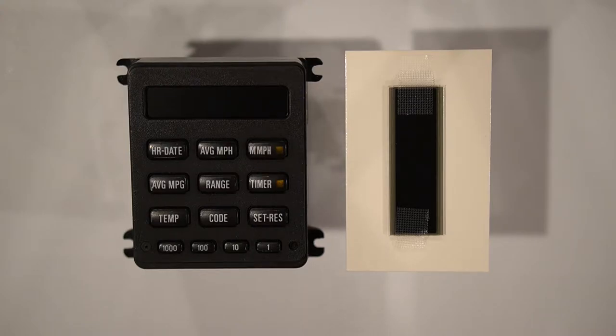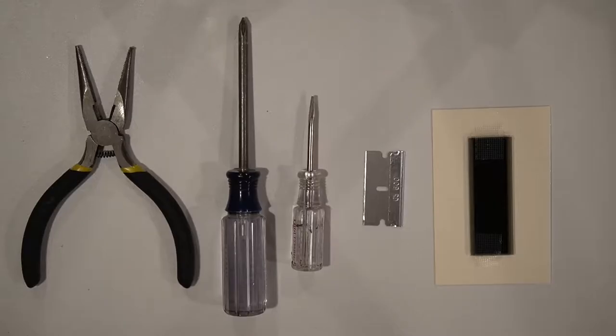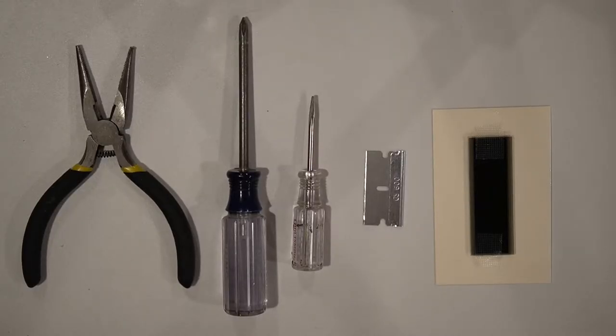In this video I'm going to show you how to replace your BMW 13 button OBC LCD screen. To start you're going to need some basic tools including a needle nose pliers, Phillips screwdriver, a small flathead screwdriver, a razor blade, and the replacement LCD screen.